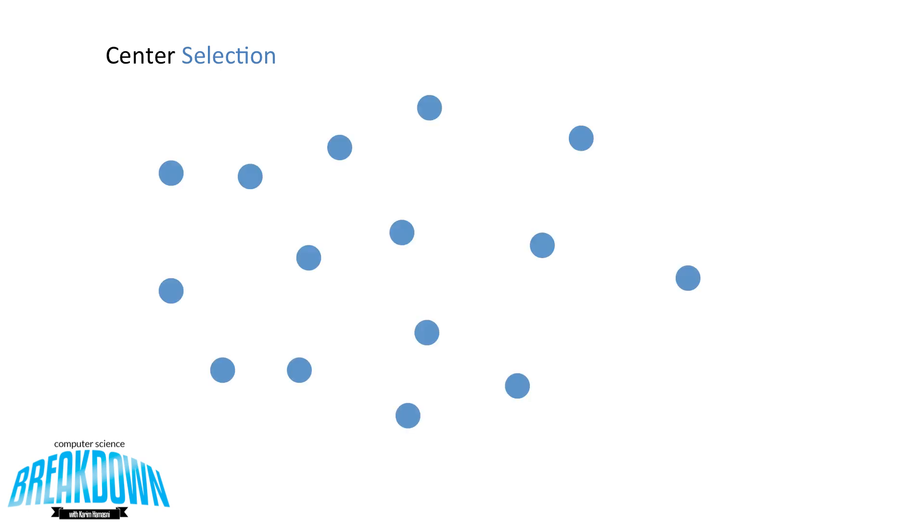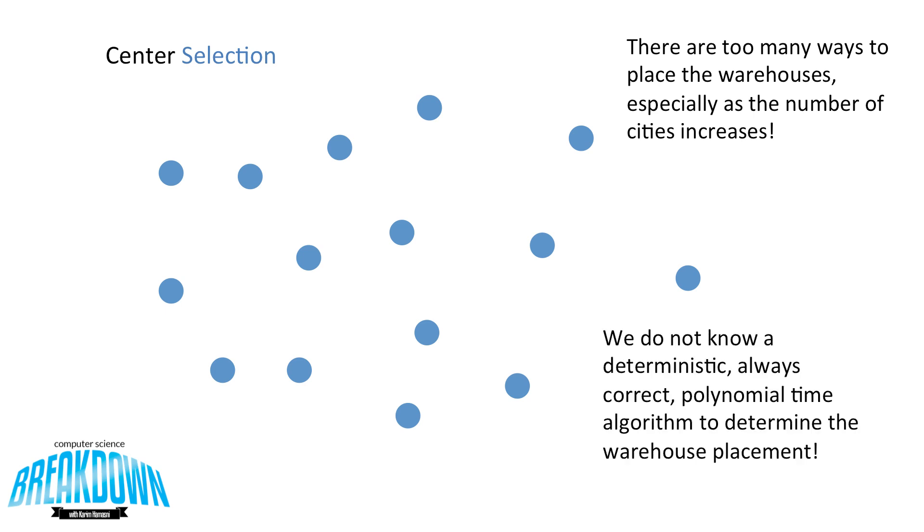So let's look back at the map of cities that we've looked at earlier. There are far too many ways to place warehouses, especially as the number of cities increases. So this map is relatively small, but what if we had a map with thousands of cities or even millions of cities? Then there would be too many ways to place warehouses to try out. So we do not know a deterministic, always correct, polynomial time algorithm to determine the warehouse placement. So the best we can do is to use an approximation algorithm.